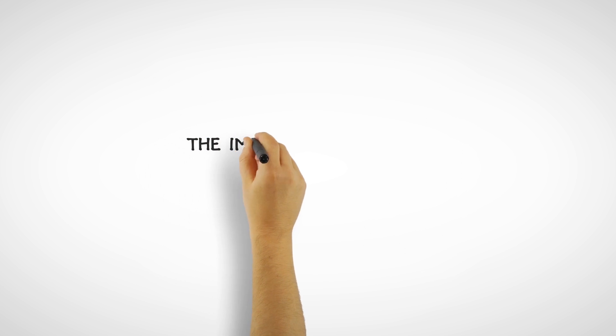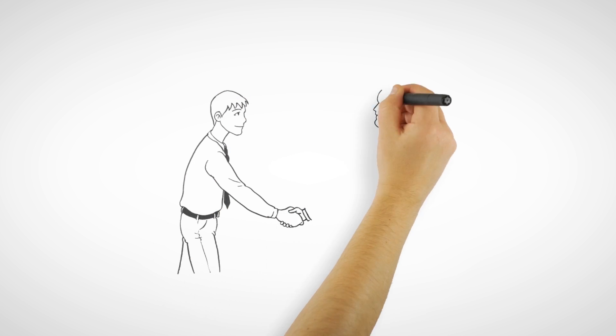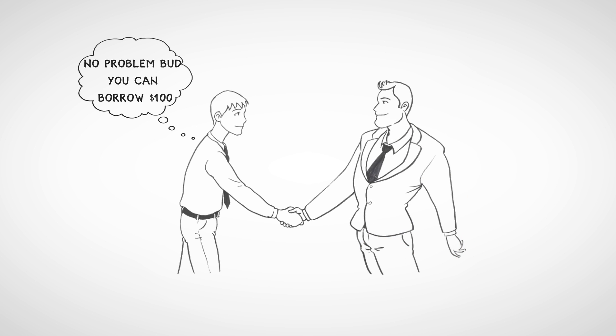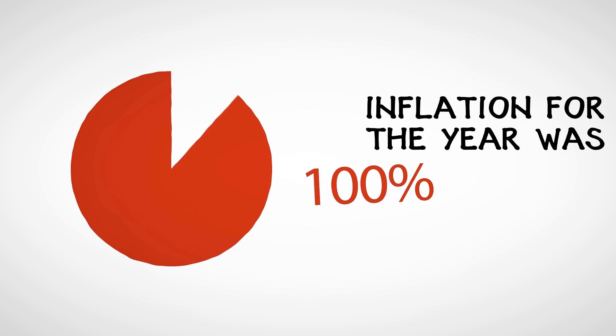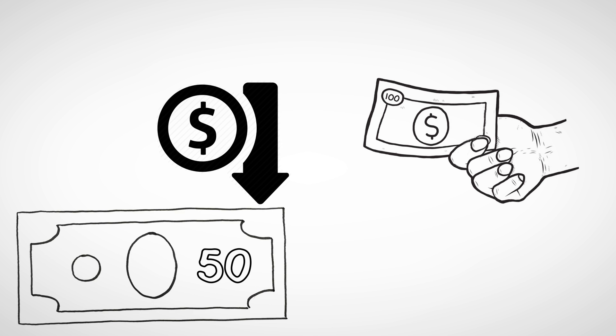The Impact of Inflation. Let's see how inflation impacts the economy. Here's Mike and Ralph. Imagine Mike lent Ralph $100 on January 1st of last year. Ralph agreed to pay Mike back after a year on January 1st. The following year, Ralph comes to pay Mike back — he pays Mike $100 and has met his obligation. However, inflation for the year was 100%. Ralph has paid Mike back $100, but he can now only buy what $50 did a year ago. Ralph is paying Mike back with dollars that have lower purchasing power. It's Ralph's gain and Mike's loss.